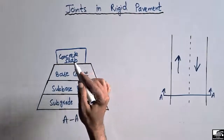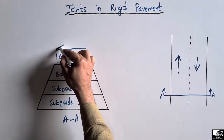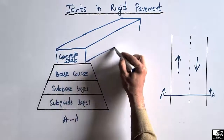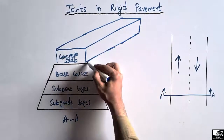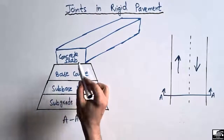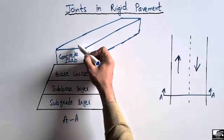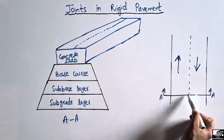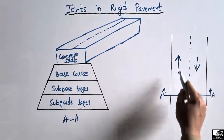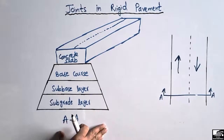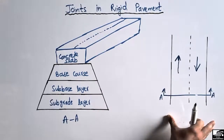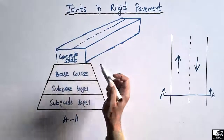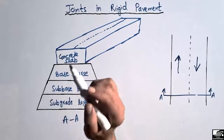If we look at the 3D view of this concrete slab, this is the pavement and these are the three layers below the concrete slab. The traffic moves on the top of this concrete slab, and this is again the center line. This is the longitudinal view of the rigid pavement, while this is the cross-section of that longitudinal view. The traffic will move in both directions on top of the concrete slab.